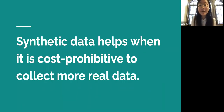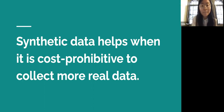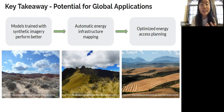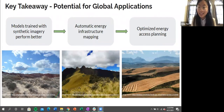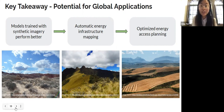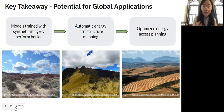Our key takeaway is that synthetic imagery can really help the object detection model to generalize across different geographical settings, especially when we have a lack of real data and when it's cost-prohibitive to collect and label more real data. Because of this promising improvement brought by synthetic imagery, our method has great potential to be applied to regions across the world with low or no access to electricity. Even if we cannot get sufficient labeled images of these diverse geographies, synthetic imagery can be easily generated by taking overhead images of the regions, the model performs better, and we can help local stakeholders optimize their energy access planning.